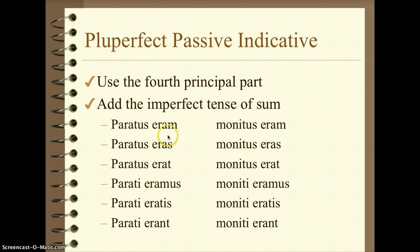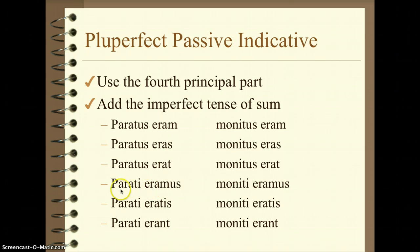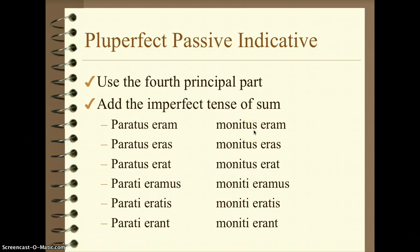So paratus eram, paratus eras, paratus erat. Pluperfect translates as had: I had been prepared, you had been prepared, he/she/it had been prepared, we had been prepared, y'all had been prepared, they had been prepared. Take it one piece at a time — the M tells me I, eram in the two-word format tells me had, the fourth principal part tells me been (it is passive), and the stem tells me warned. So I had been warned, just like the actives, translating from the back of the word to the front.